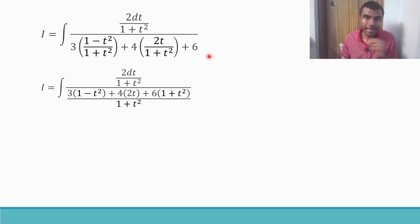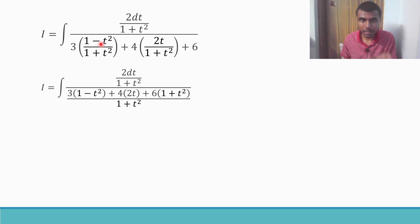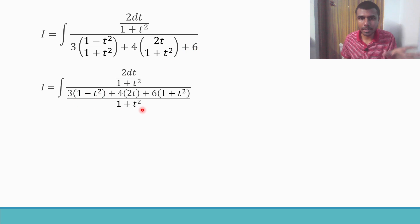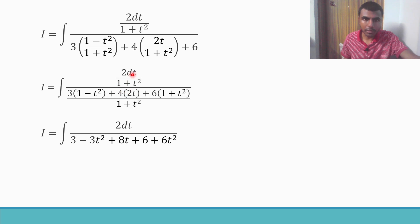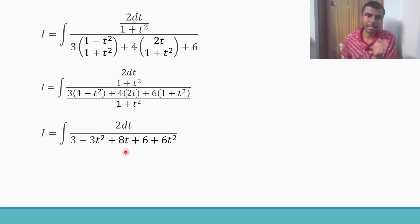In the denominator, take the LCM, which is (1 + t²). The first two terms already have (1 + t²) in the denominator, but the 6 does not, so it becomes 6(1 + t²). Once LCM is taken, (1 + t²) cancels with the numerator. The denominator becomes: 3(1 − t²) + 8t + 6(1 + t²).